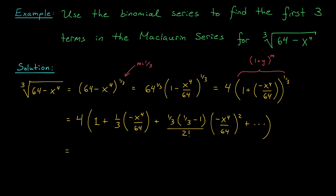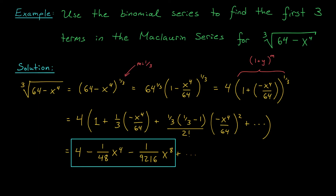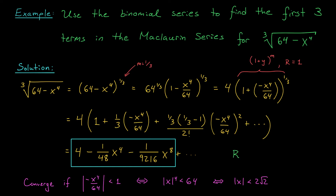If you simplify these first three terms, you should be left with 4 minus 1 over 48 times x to the 4, minus 1 over 9,216 times x to the 8, and then the series continues. As a bonus, what's the radius of convergence of this series? We used the binomial series, which has radius of convergence 1. Except instead of x, we had minus x to the 4 over 64. So our series converges provided that the absolute value of minus x to the 4 over 64 is less than 1 — that is, the absolute value of x to the 4 is less than 64. By taking fourth roots on both sides, the series converges when the absolute value of x is less than 2 root 2, so 2 root 2 is our radius of convergence.